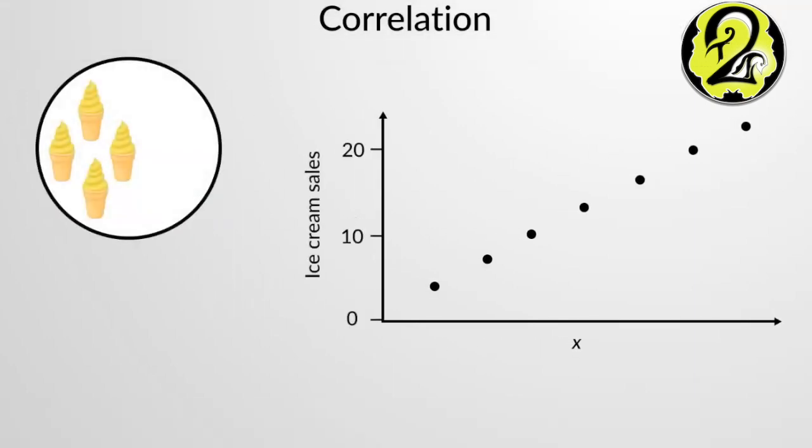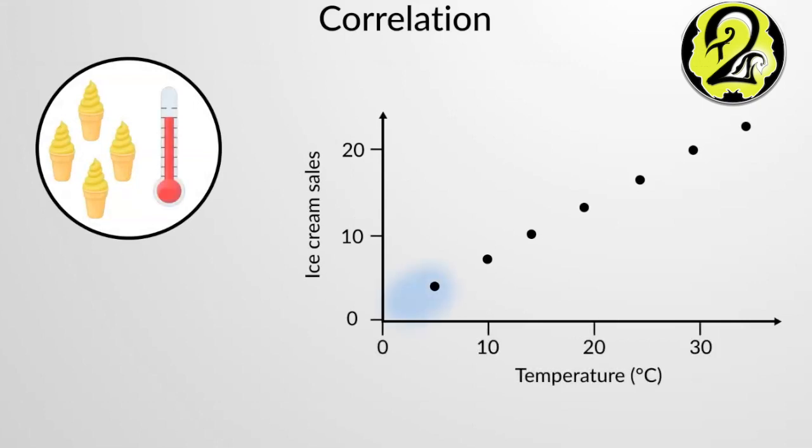Consider the scatter plot of ice cream sales as a function of the temperature, which shows a distinct linear pattern. Since ice cream sales increase with temperature, these variables have a positive correlation.